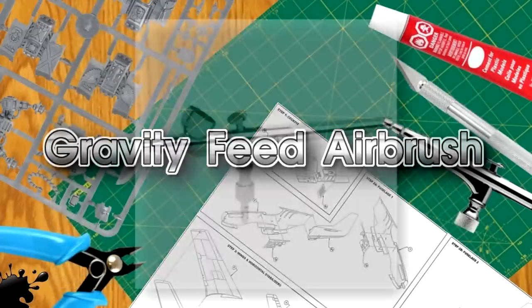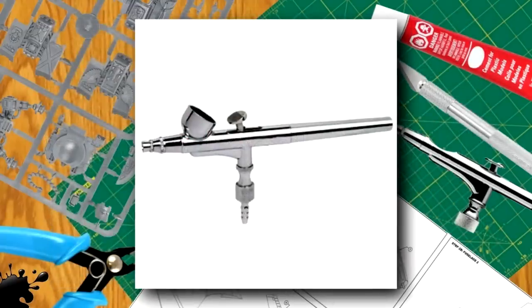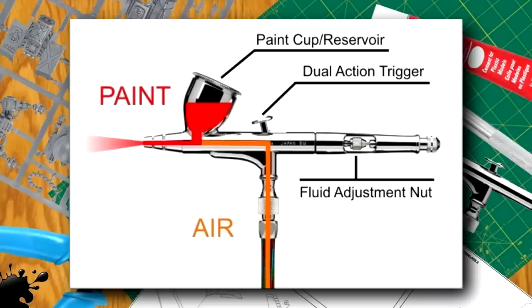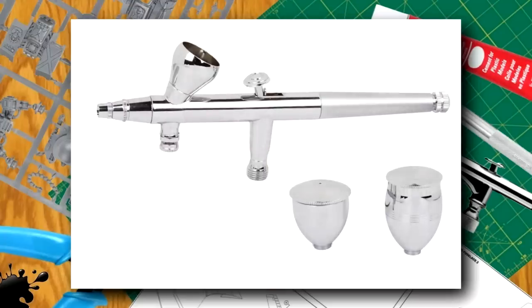Gravity feed refers to airbrushes with smaller paint cups on top of the airbrush in which gravity draws paint into the airbrush. Less air pressure is required enabling slower movement which creates excellent control for fine detail applications. Also, some paints and lacquers require lower pressures.